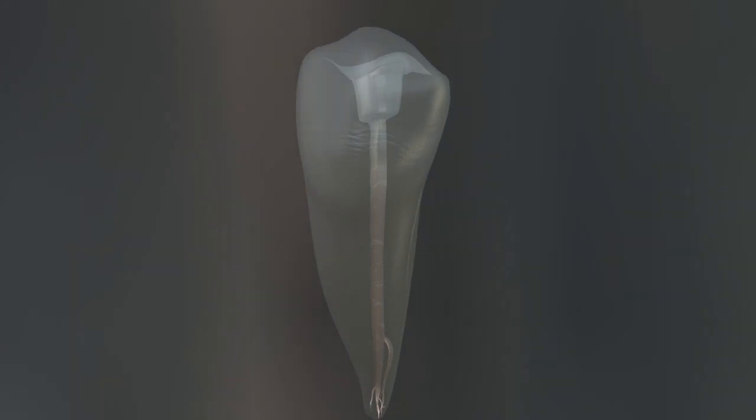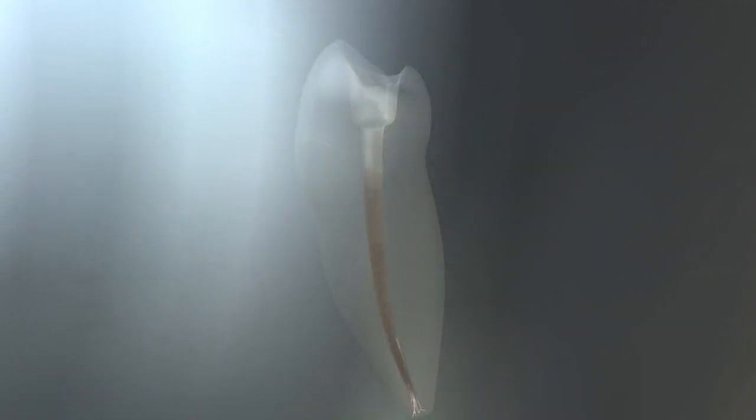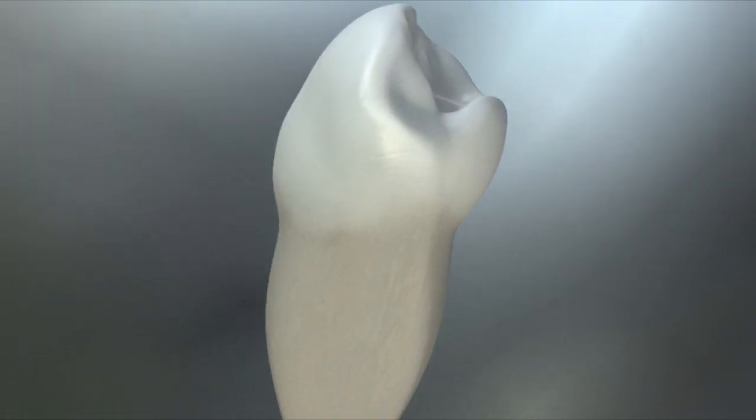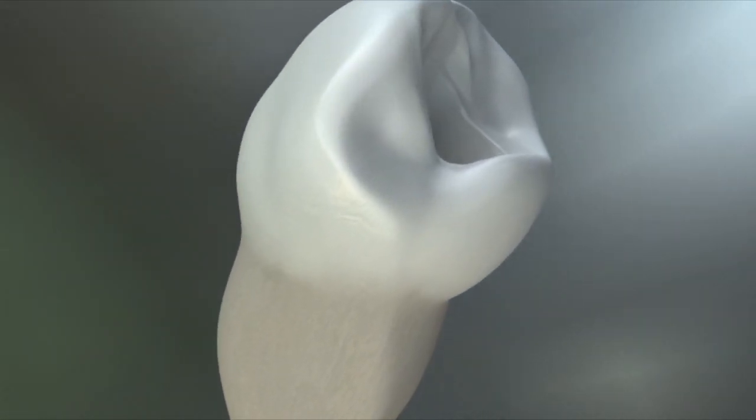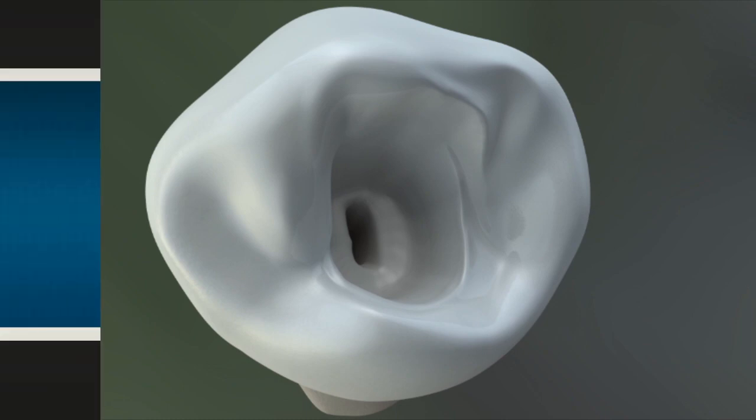The root canal system is complex. Even single-rooted teeth may contain multiple points of exit, isthmuses, tissue webs, fins, laterals, canal anastomosis, and the splitting of the root canal at any point along its presumed straight path to the apical foramen.